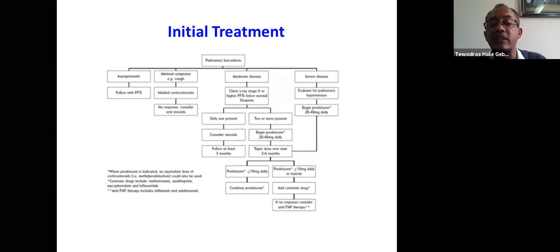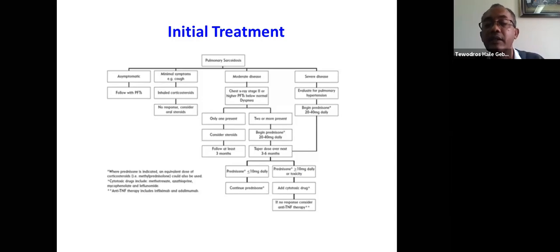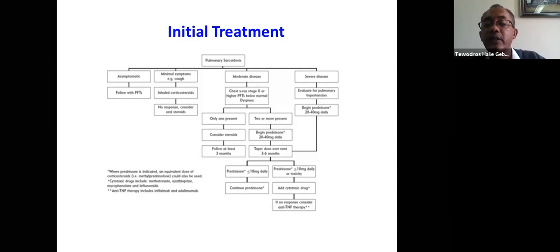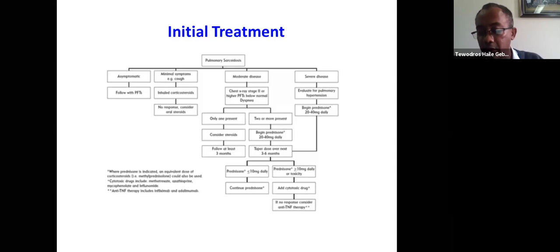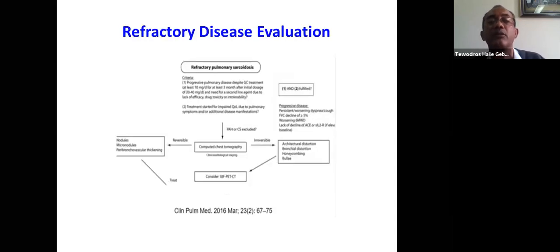If the patient fails second-line therapy with methotrexate or other cytotoxic drugs, the third-line therapy is anti-TNF therapy — recalling from the etiopathogenesis that TNF was one of the key cytokines. Infliximab and adalimumab are the anti-TNF agents used. When do you say refractory pulmonary sarcoidosis? A patient has progressive pulmonary disease despite at least 10 mg per day prednisolone for at least three months after an initial dose of 20–40 mg, and needs a second-line agent due to lack of efficacy. Progressive disease is defined as worsening dyspnea or cough, FVC decline of more than 5%, worsening 6-minute walk distance, or lack of DLCO improvement.